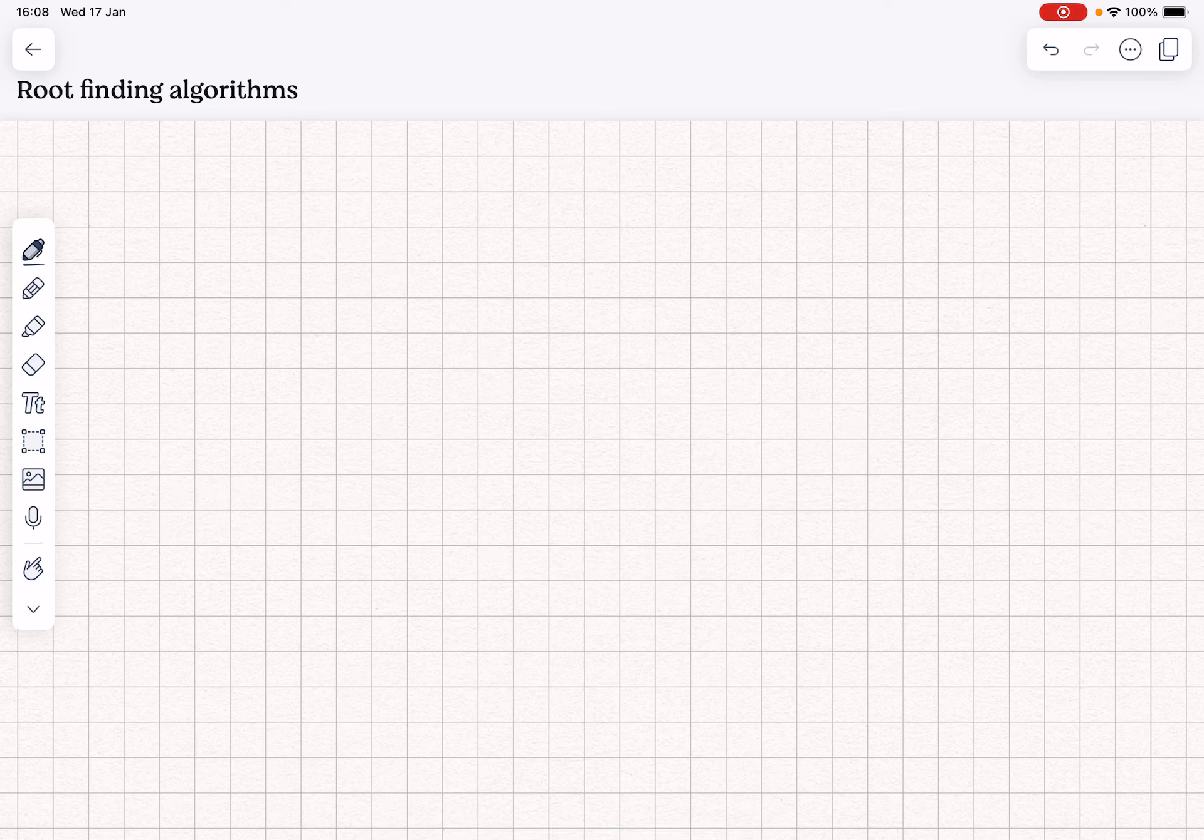I'm going to discuss some of the ideas behind root-finding algorithms. The first one we're going to consider is bisection. Bisection is a pure process. There's no real maths behind it.